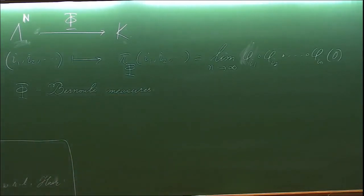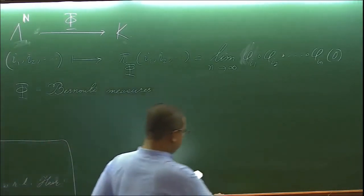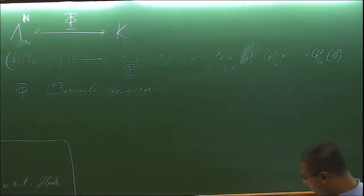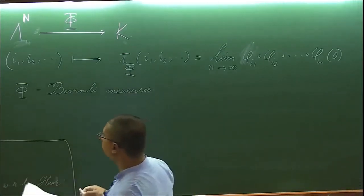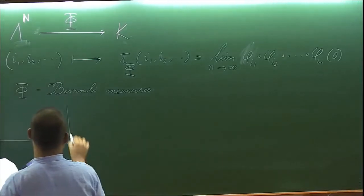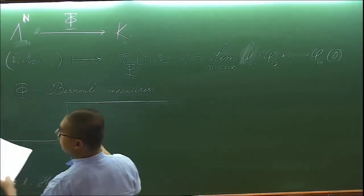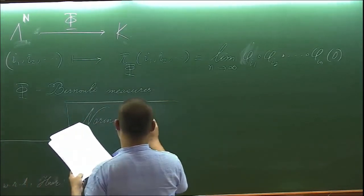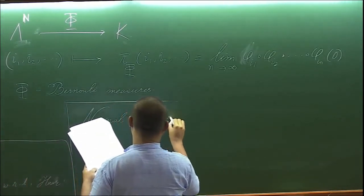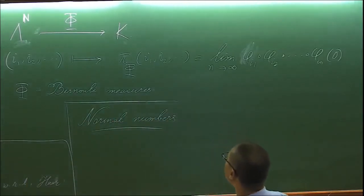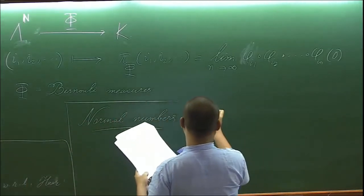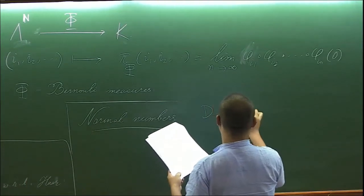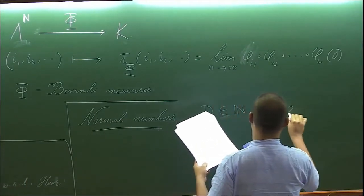So henceforth, whenever we will consider some self-similar sets, we will always assume that it is equipped with some Bernoulli measure. So now let's define the other notion, normal numbers. Fix an integer d greater than 2, we say that x is normal to the base d if